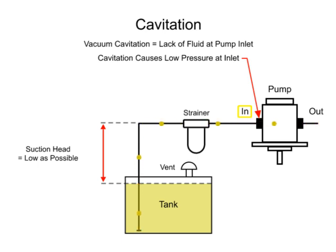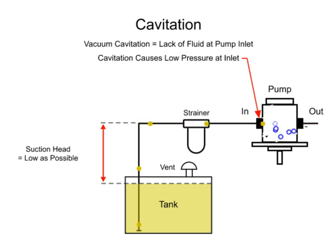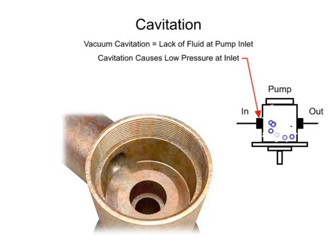When the pressure at the pump inlet drops below the vapor pressure of the liquid, vapor bubbles form and the fluid appears to boil. When the bubbles collapse, they can damage the pump by removing small pieces of metal. This is called pitting and can cause permanent damage to the pump.